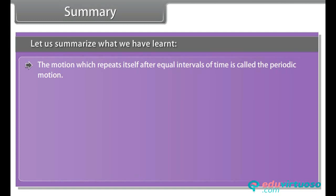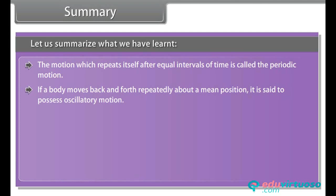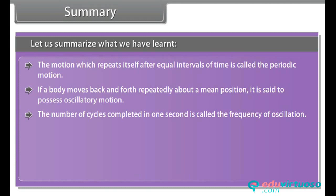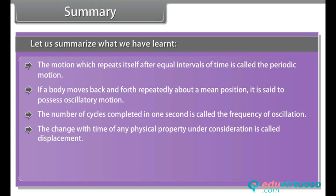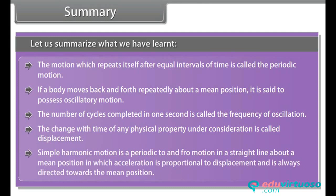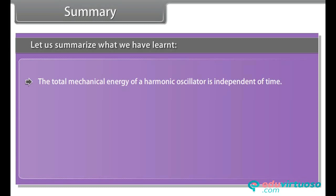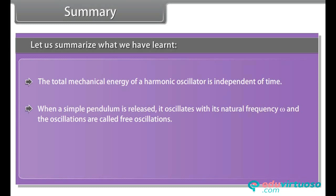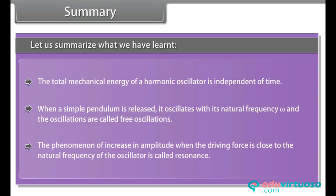Summary: the motion which repeats itself after equal intervals of time is called periodic motion. If a body moves back and forth repeatedly about a mean position, it possesses oscillatory motion. The number of cycles completed in one second is the frequency of oscillation. Simple harmonic motion is a periodic to-and-fro motion about a mean position in which acceleration is proportional to and directed towards the mean position. The total mechanical energy of a harmonic oscillator is independent of time. Free oscillations occur at natural frequency ω; resonance occurs when the driving force frequency approaches the natural frequency.